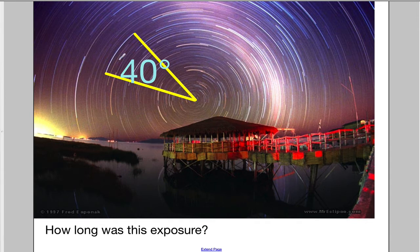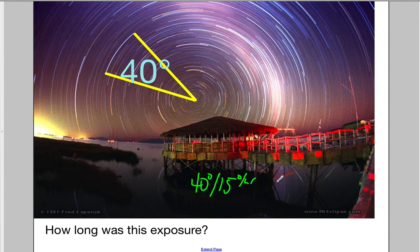Here we have another one. With 40 degrees, if you have a calculator, you would do 40 degrees divided by 15 degrees per hour, and you get an answer just under three hours — about two hours and 45 minutes if you're rounding.